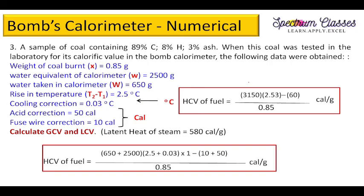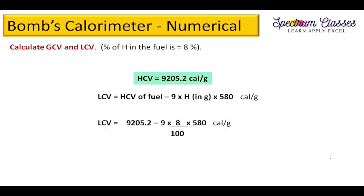Putting all values into the formula: small w + capital W, then T2−T1 plus cooling correction, multiplied by S, minus all corrections, divided by x. On solving, we get the HCV value. From HCV, LCV = HCV − 9 × (weight of hydrogen in grams) × latent heat of steam.